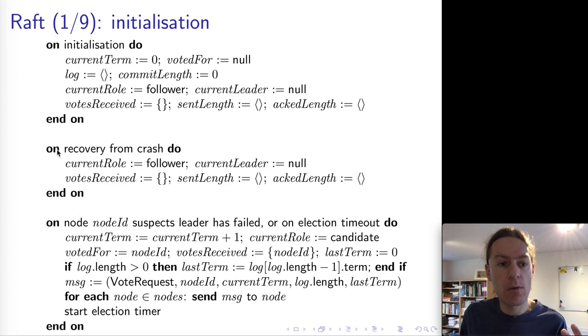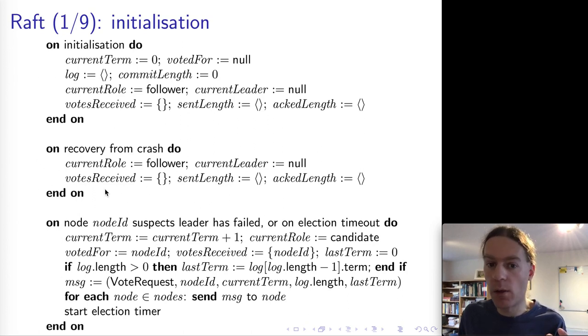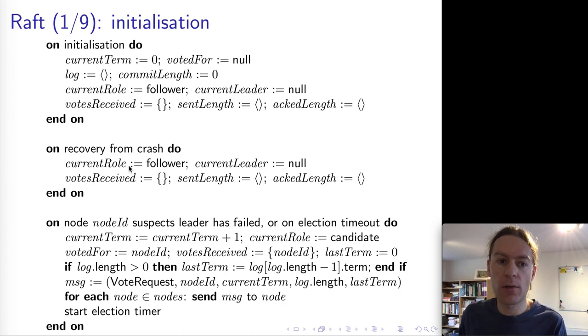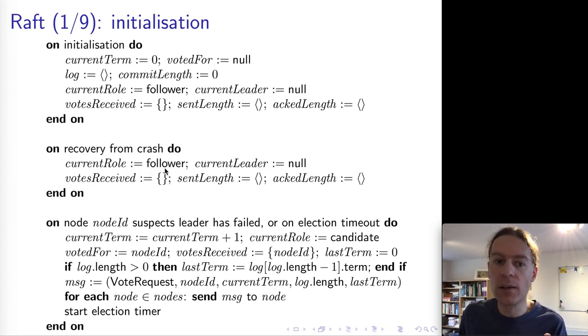If a node crashes, we have a block which resets the volatile variables to their initial state. After a crash and recovery, we go back into the follower state, and so on.